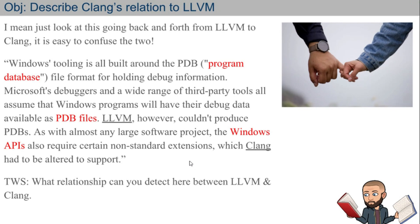Clang in particular has diagnostic tools such as ASAN and UBSAN that Google wanted to use. Windows tooling is built around PDB — Program Database — a file format for holding debug information. Microsoft's debuggers and a wide range of third-party tools assume that Windows programs will have their debug data in PDB files. So if you see a PDB file while poking around in PowerShell, that's what that is.